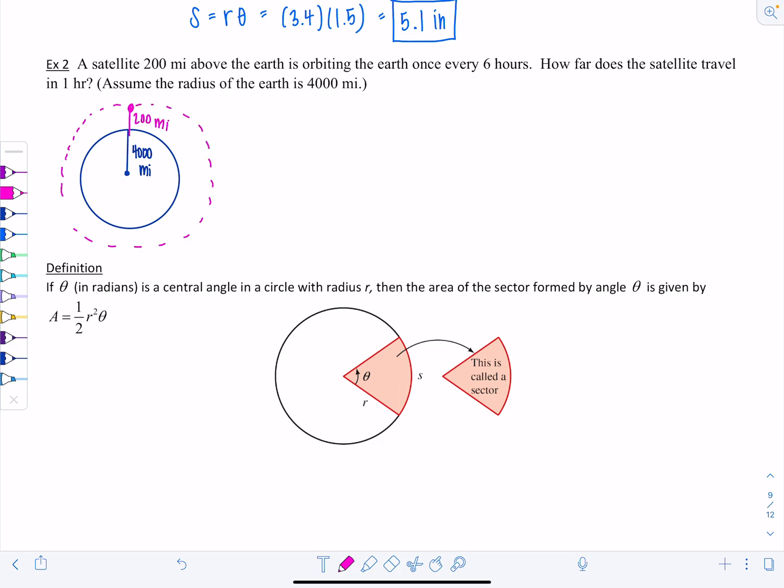I'm not going to worry about the once every six hours part. First, I want to find out how far it travels when it goes all the way around and completes one revolution. What is the arc length? s equals r times theta.